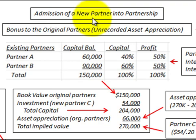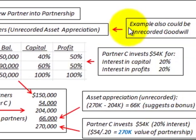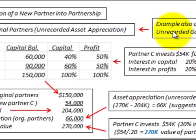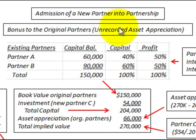Here we're going to be looking at admission of a new partner into a partnership. Our example is going to be a bonus going to the original partners based on some unrecorded asset appreciation. The example also could be for some unrecorded goodwill, but in either case the new partner coming in is going to create a bonus going to the original partners based on the investment that they make.